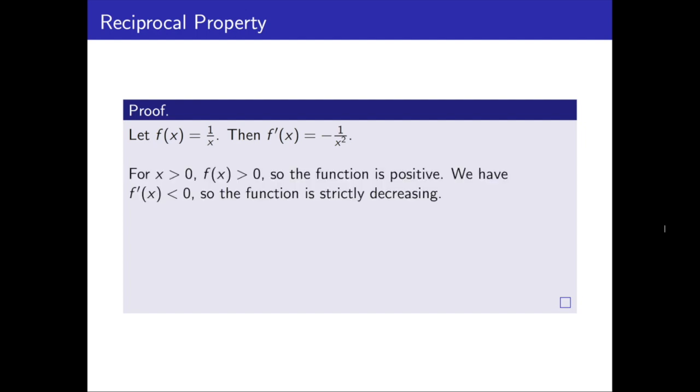Now, we're only interested in positive x values, and when x is positive, f of x is 1 over a positive number, so it's greater than 0, which means the function is always positive. We can also consider what happens to the derivative, we have negative 1 divided by a positive number, x squared. So the derivative is negative, which means the function is strictly decreasing.